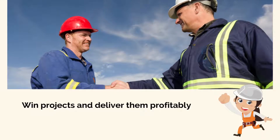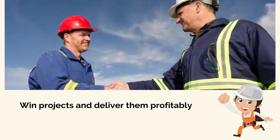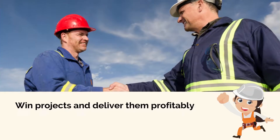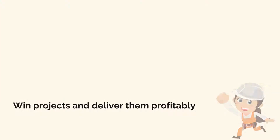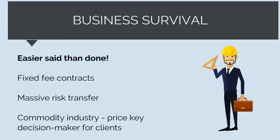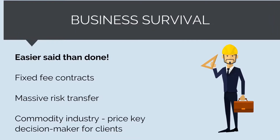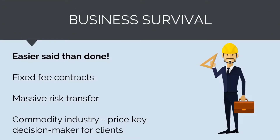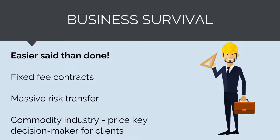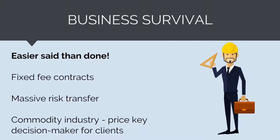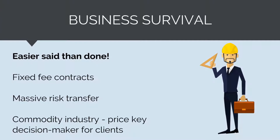As a construction company, to generate profit we need to win projects and then deliver them profitably. Unfortunately, this is easier said than done. Construction contracts are usually fixed fee, meaning a contractor is paid what they quote for the job, not the actual costs to complete the works. So if you quote $5 million to build a bridge and it costs $50 million, the client is still only going to pay $5 million.